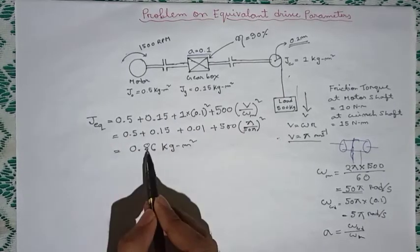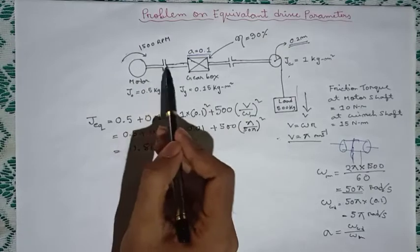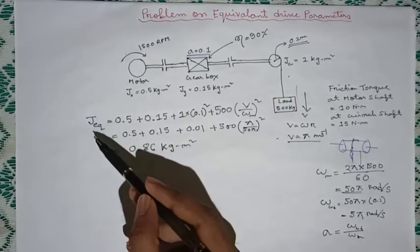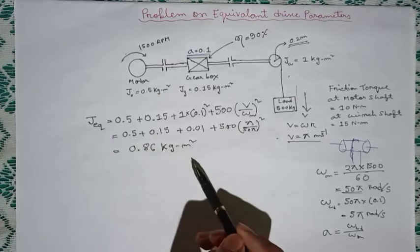This is the equivalent moment of inertia of this system referred to the motor shaft. Now I hope how to solve the equation related to moment of inertia is clear now. Now we will see how we can get the equivalent torque at the motor shaft.